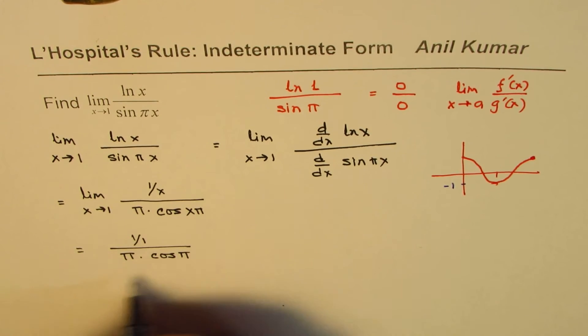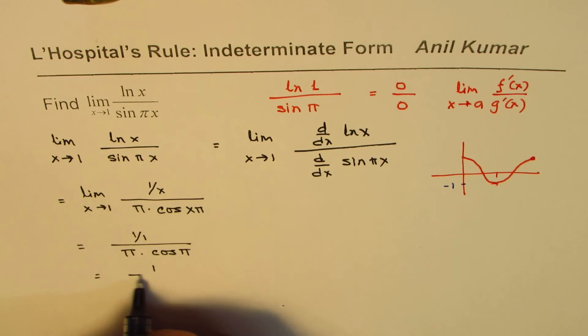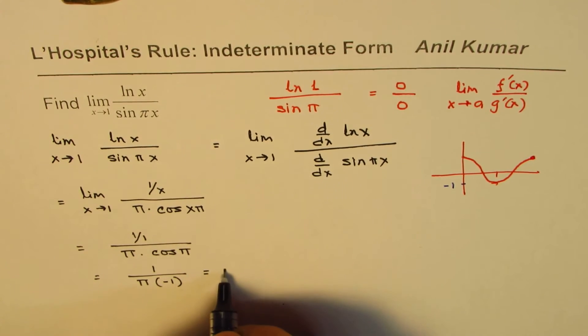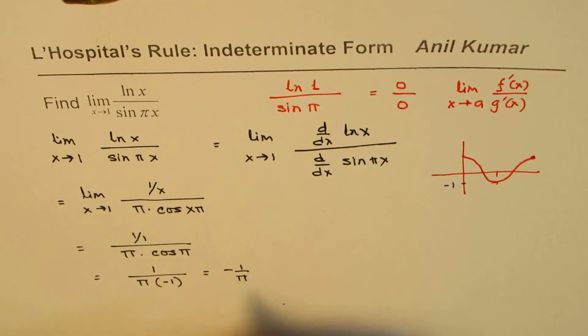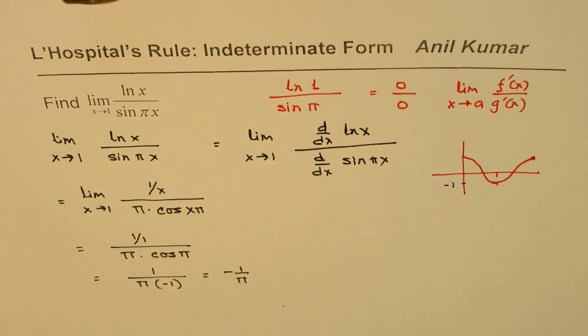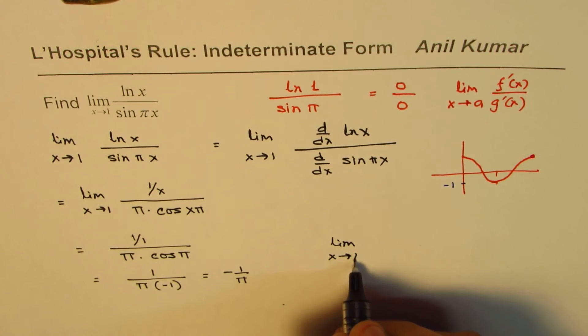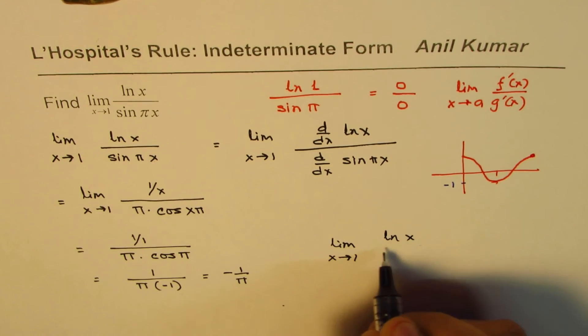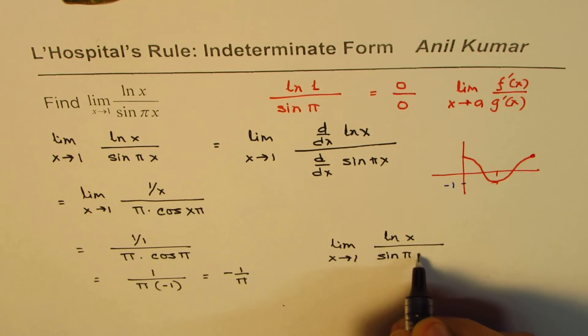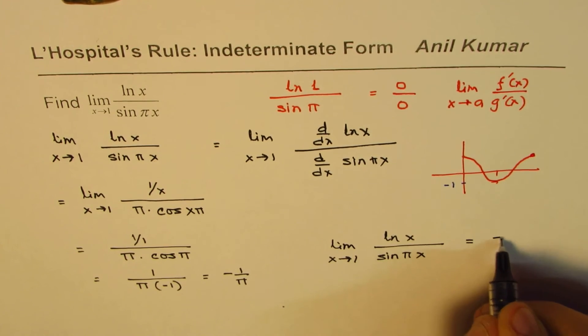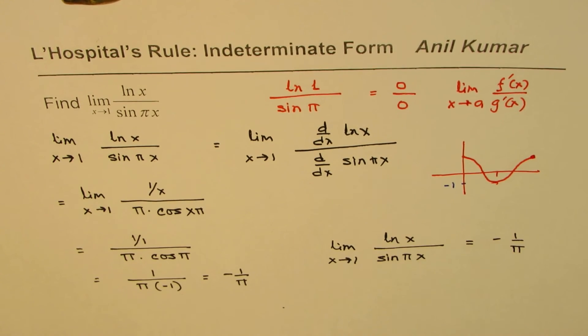this is equal to 1 over π, so that is how you get your solution. Therefore, we can write limit as x approaches 1 for ln x over sine π x equals minus 1 over π.